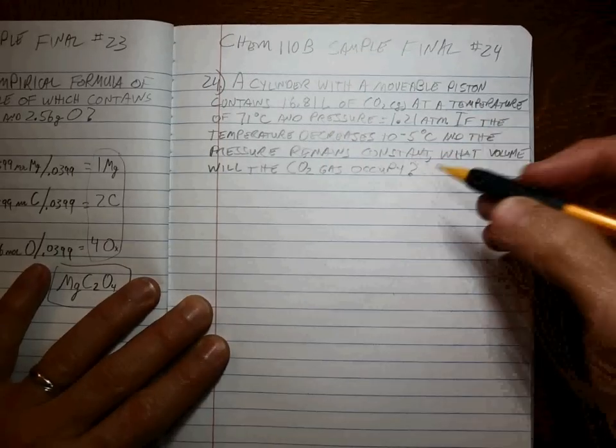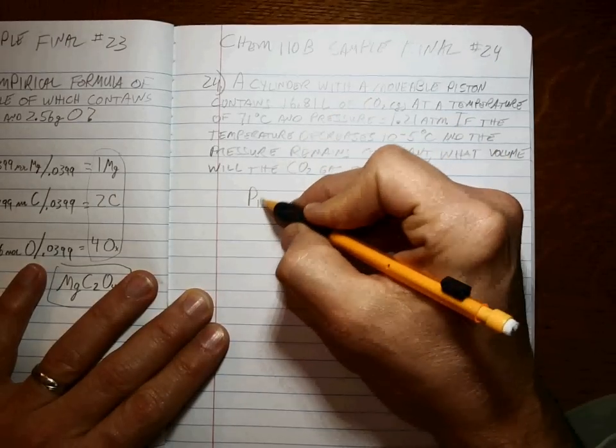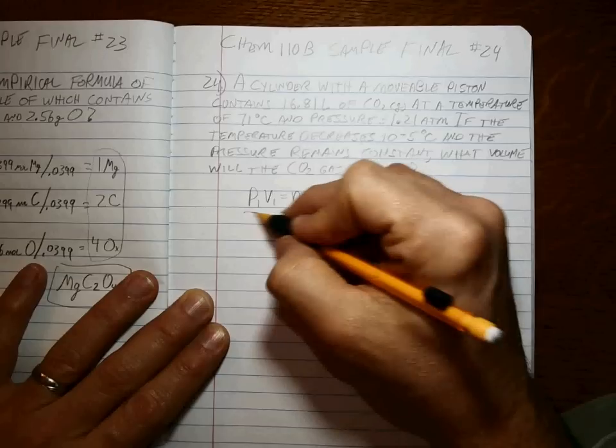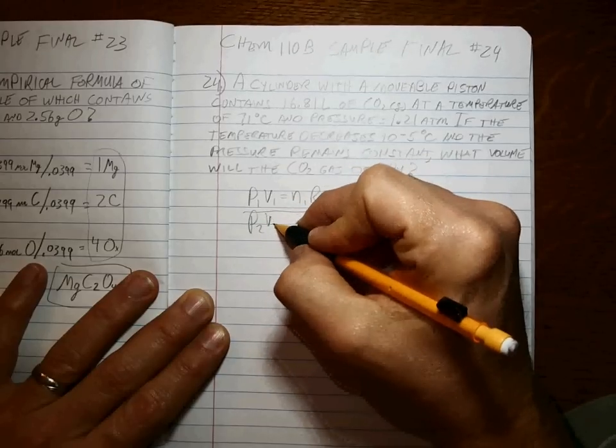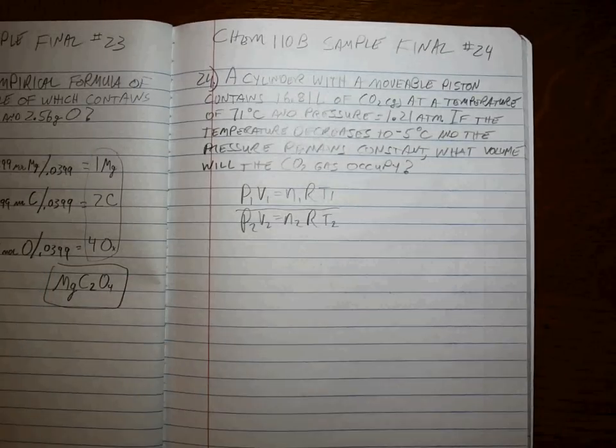Alright, you've got gases, pressures, temperatures, different temperatures, different volumes. That's a P1V1 equals N1RT1 over P2V2 equal N2RT2 problem if I ever saw one.